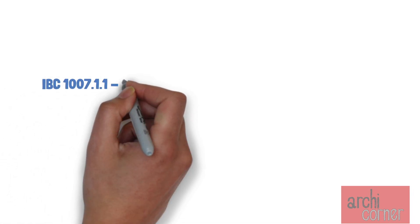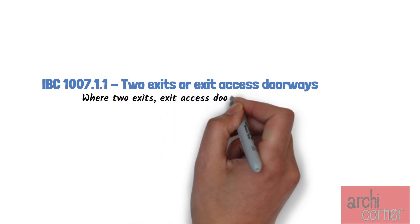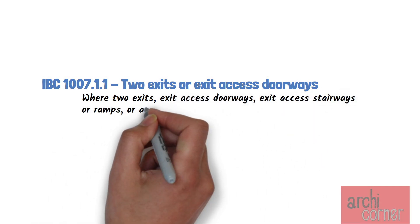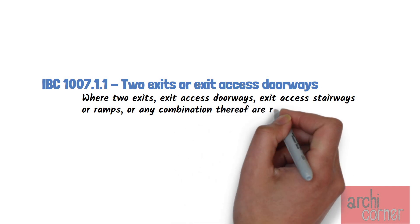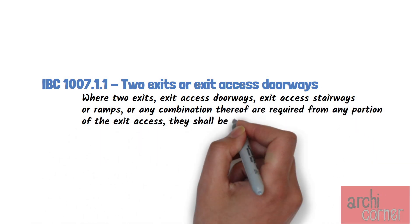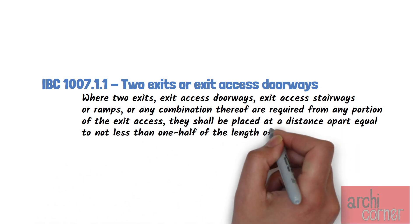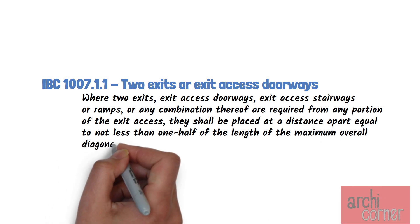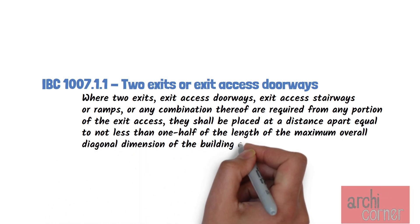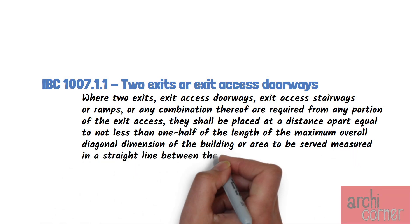Let's see what the IBC states in section IBC 1007.1.1. It reads: Where two exits, exit-access doorways, exit-access stairways or ramps, or any combination thereof, are required from any portion of the exit access, they shall be placed at a distance apart equal to not less than one-half of the length of the maximum overall diagonal dimension of the building or area to be served, measured in a straight line between them.